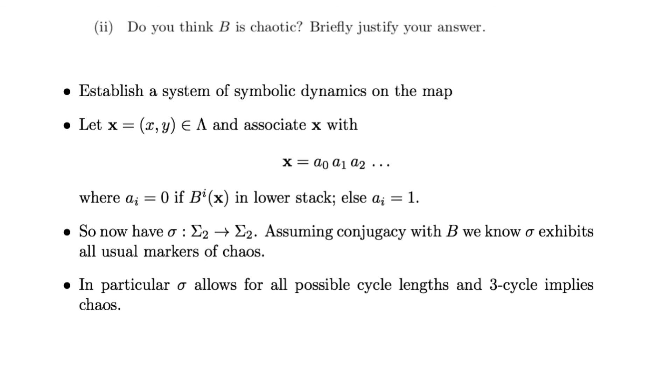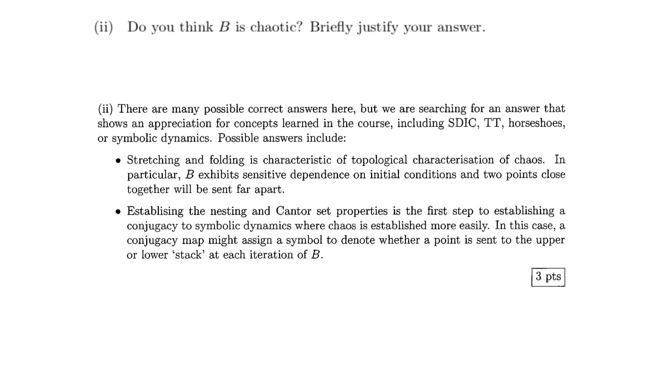So now, you have the shift map sigma defined on the symbol sequences of two elements, the binary sequences, and assuming you have conjugacy with the Baker map, we know that sigma exhibits all the usual markers of chaos. In particular, we know that sigma allows for all possible cycle lengths by the usual proof, and by a theorem in the course, the existence of a three cycle implies chaos. For the exam, the students weren't expected to write as much detail for this part of the question, which is only worth three points, but you can have a look at the exam solutions for an idea of what was expected of the students to write.